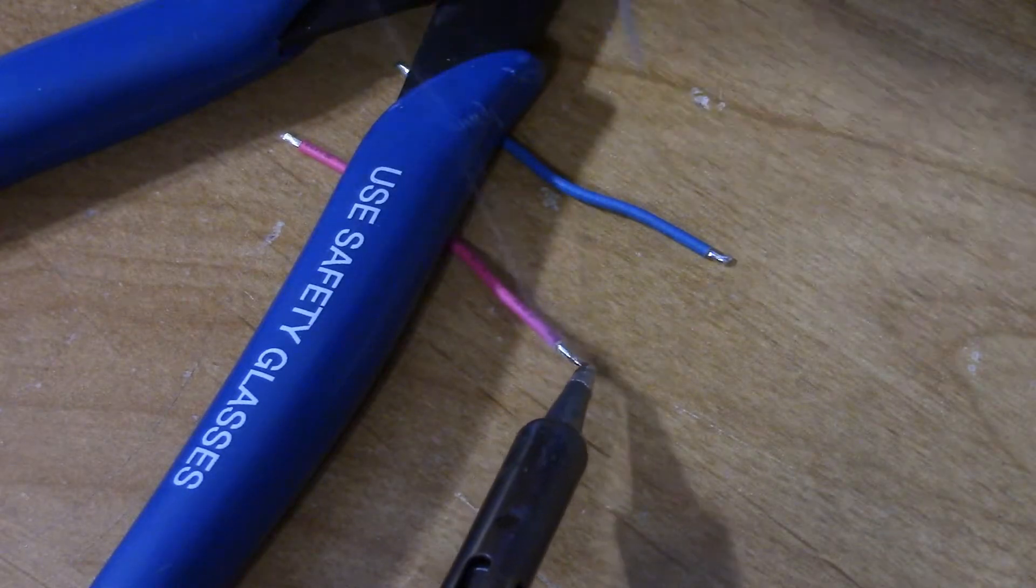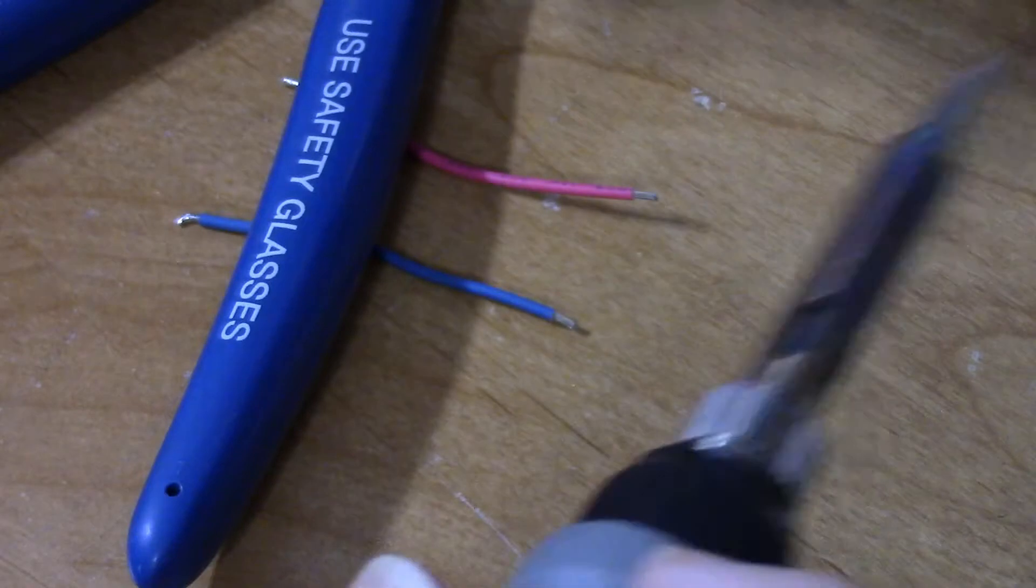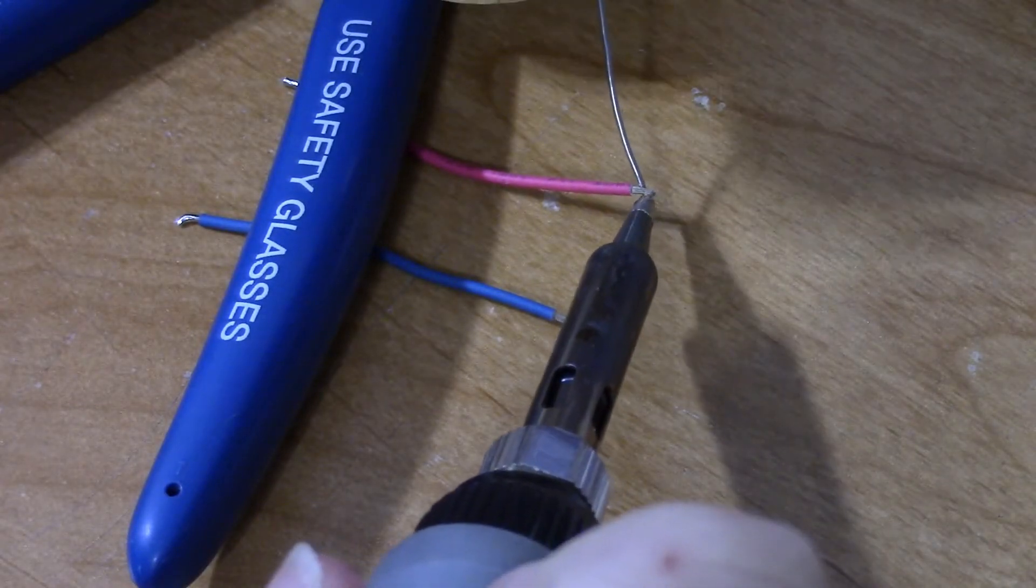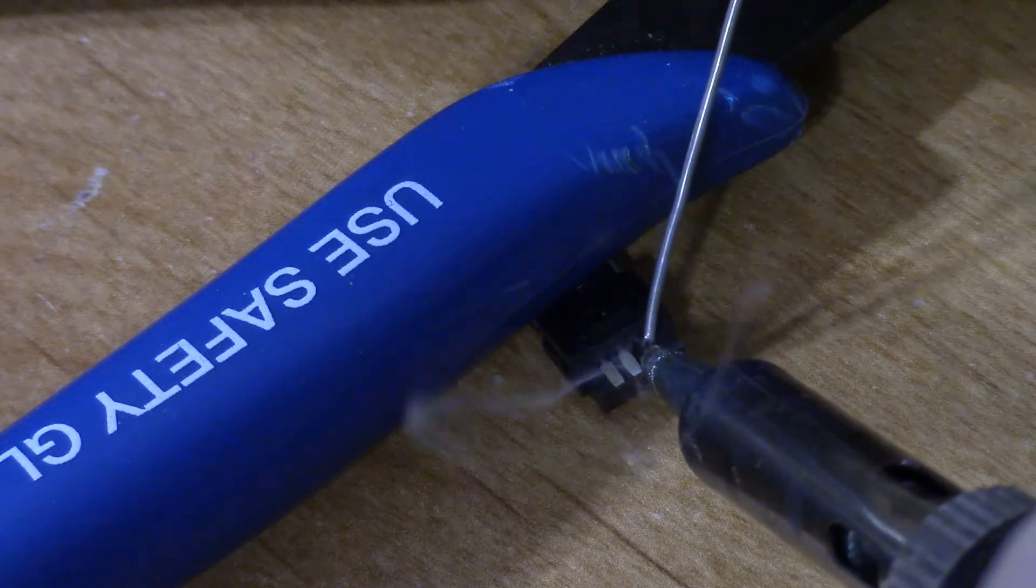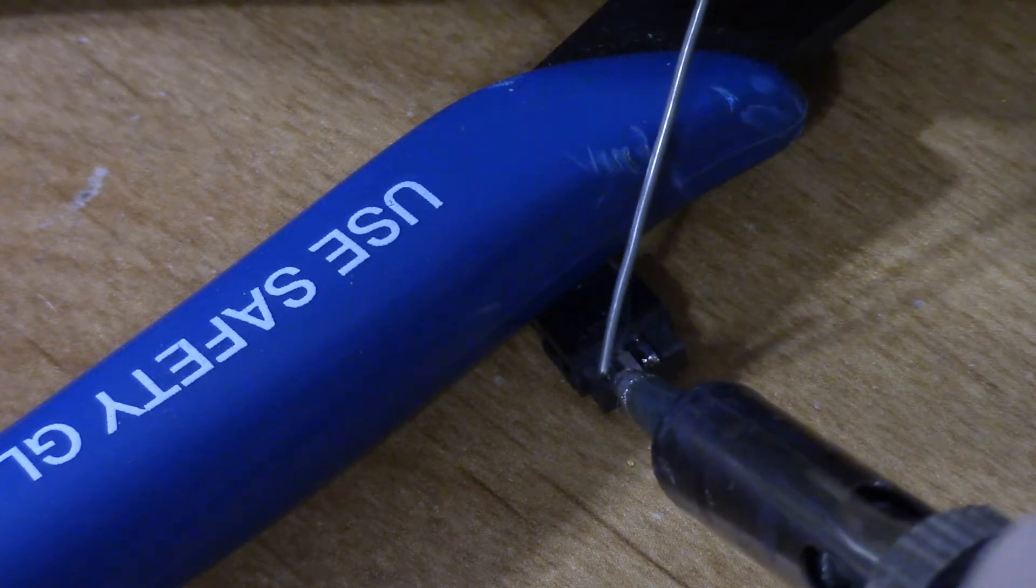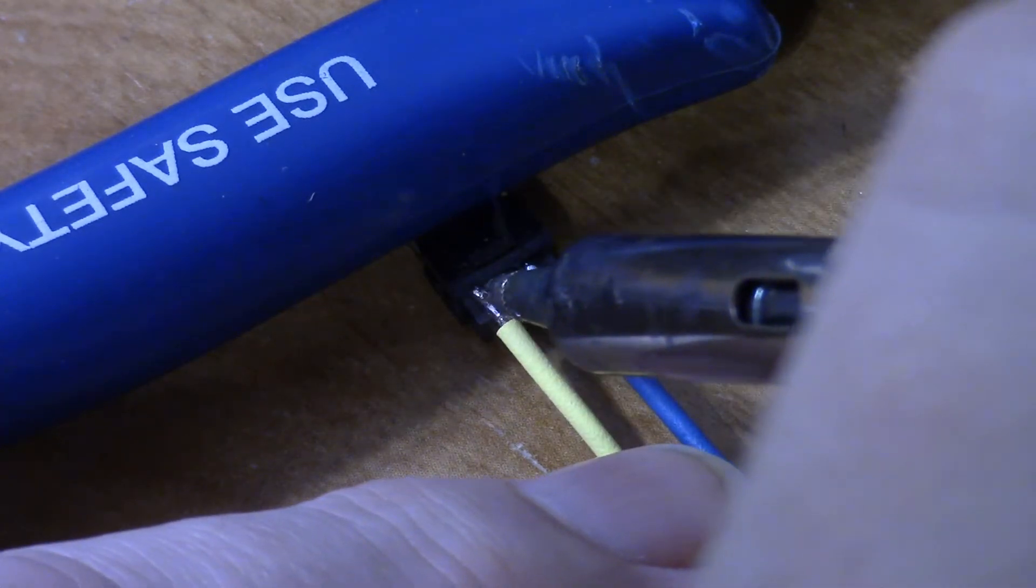Tin a couple of small wire leads to connect to the micro USB connector. Tin the power connections on the micro USB connector. Solder one end of those wire leads to the micro USB connector.